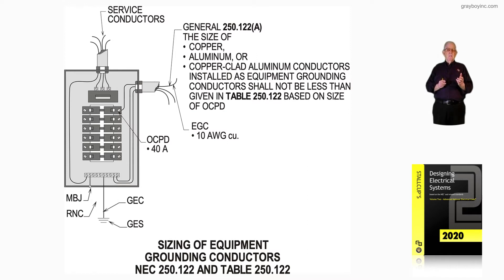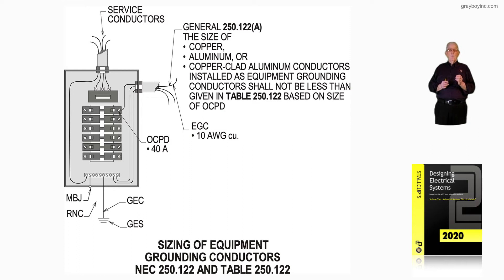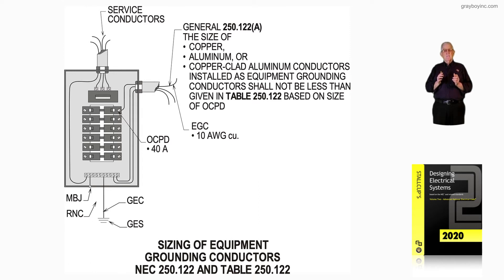In the service equipment, we have a 40-amp overcurrent protection device. Based upon a 40-amp overcurrent protection device, a number 10 equipment grounding conductor must be selected and used per Table 250.122. That is what illustration 16-113A is illustrating — how to size an equipment grounding conductor when an overcurrent device is ahead of the circuit conductors. This is, of course, load side.